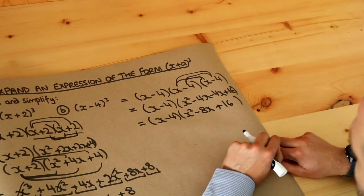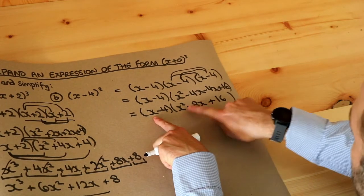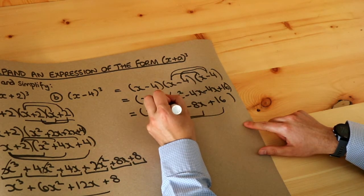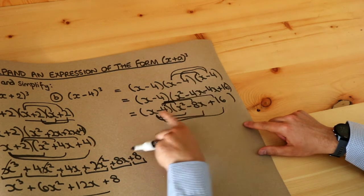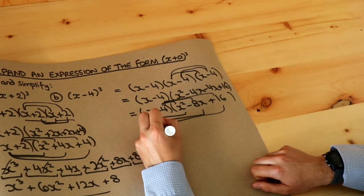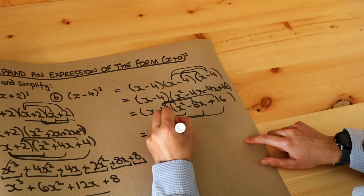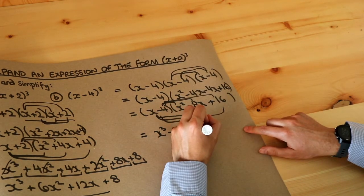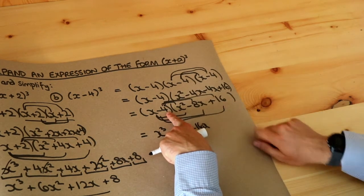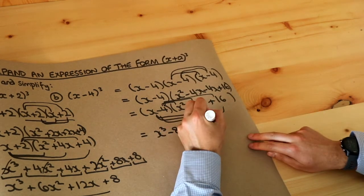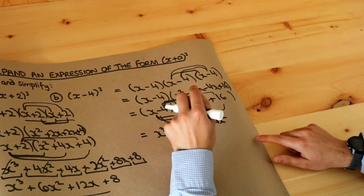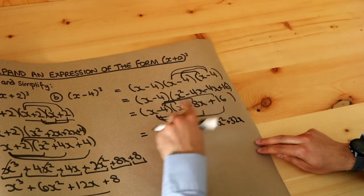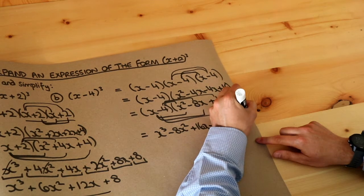Now we expand (x − 4)(x² − 8x + 16). x times x squared is x cubed. x times minus 8x is minus 8x squared. x times 16 is plus 16x. Then minus 4 times x squared is minus 4x squared. Minus 4 times minus 8x: negative times negative is positive, giving plus 32x. And finally, minus 4 times 16 is minus 64.